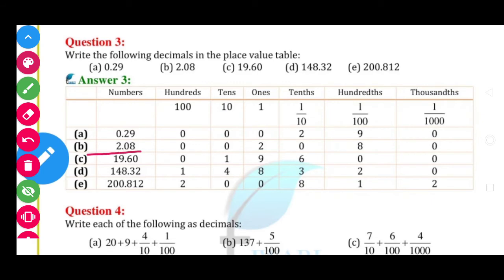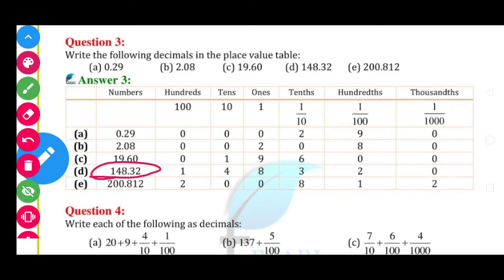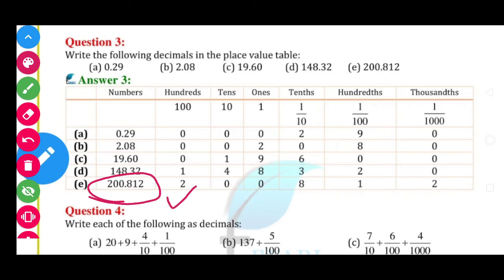2.08: 2 is in ones place, 0 is in 10th place, and 8 in 100th place. Baaki sab mein 0. Next, 19.60: 1 in 10s place, 9 in ones place, 6 in 10th place, aur 0 in 100th place, baaki 0. Then 148.32: 1 in 100s place, 4 in 10s place, 8 in ones place, 3 in 10th place, 2 in 100th place, rest is 0.